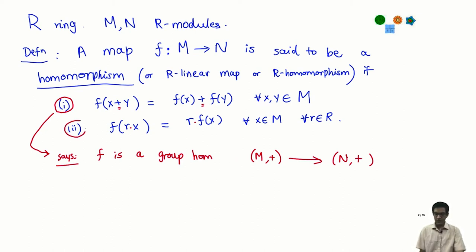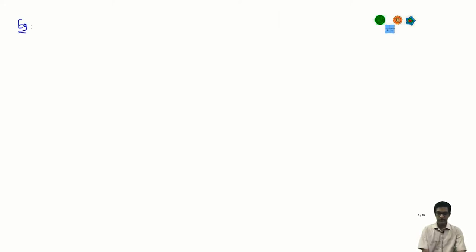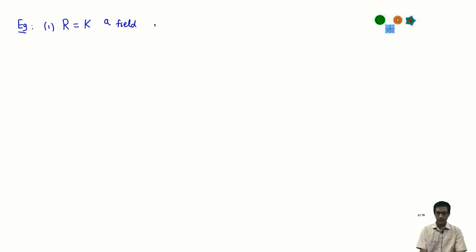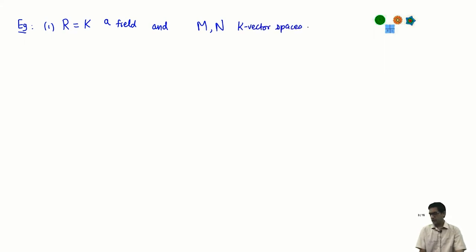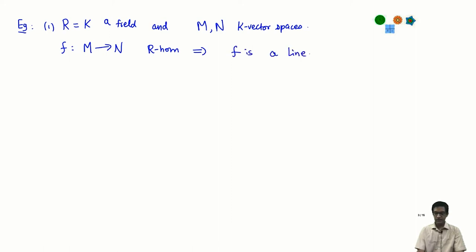Property two of course says that, in addition to being a group homomorphism, it also respects scalar multiplication. This must be a familiar notion from linear algebra — a map which preserves addition and scalar multiplication is what we call a linear transformation. If R is a field K and M and N are K-vector spaces, then a homomorphism is exactly a linear transformation. F from M to N is an R-homomorphism means F is a linear transformation of these two vector spaces.